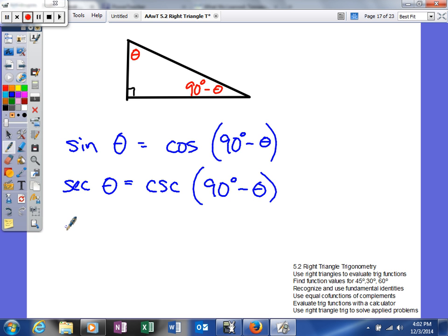The last one is tangent. The tangent of your angle equals the cotangent of the complementary angle. And vice versa, the cotangent of your angle equals the tangent of your complement.